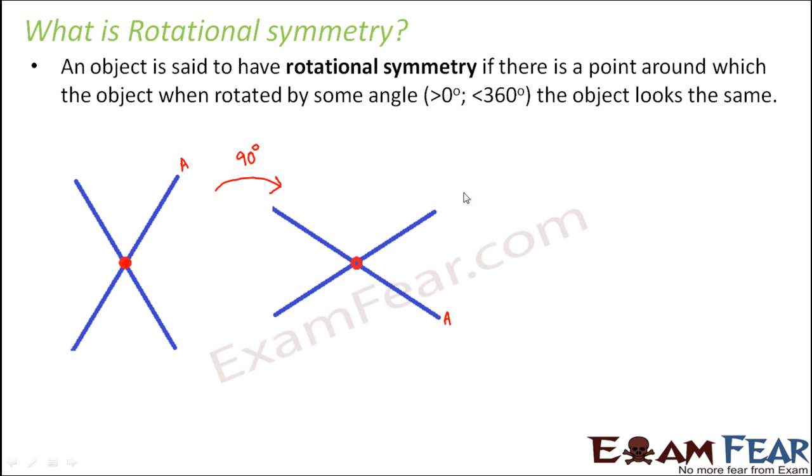What would happen if I rotate it further by another 90 degrees? From the initial position, I am now rotating it by 180 degrees total. By the first 90 degrees, A moved here. By the second 90 degrees, point A would be somewhere here.